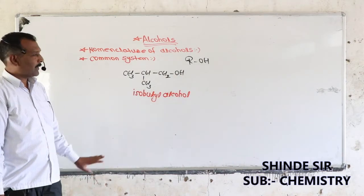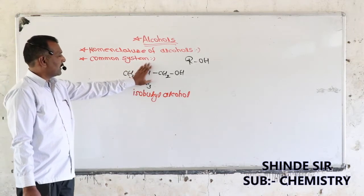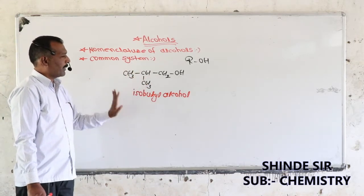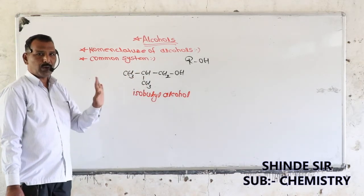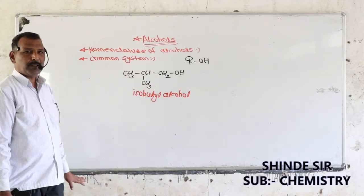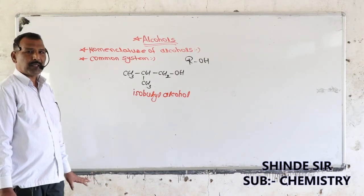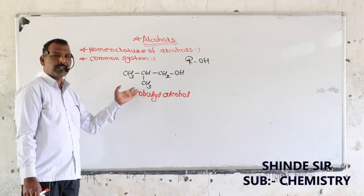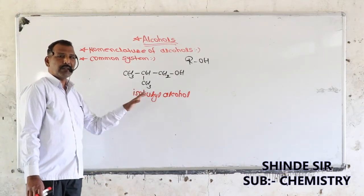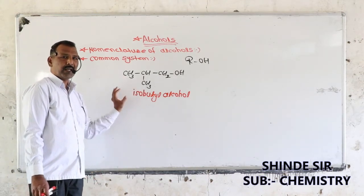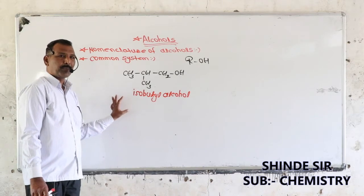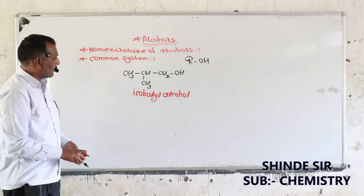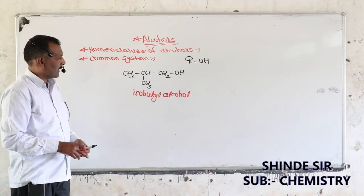So this is about how to write the common name. We have already studied the prefixes iso, secondary, tertiary, and n, and when they are used, so we will not discuss that again here.